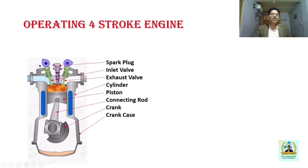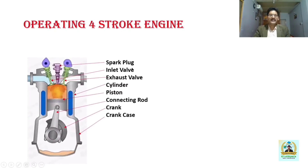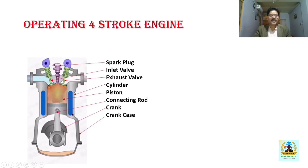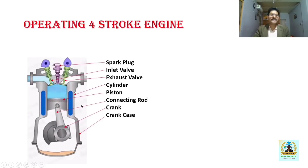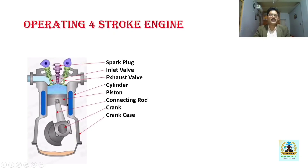This actually shows an operating four-stroke engine, and you can see the different components. You can see the spark plug, which gives the spark. Then you have the inlet valve and exhaust valve. You have a cylinder, and inside the cylinder the piston is reciprocating. You have a connecting rod, which connects the piston with the crankshaft. The piston pin or gudgeon pin provides the connection between the piston and the connecting rod.